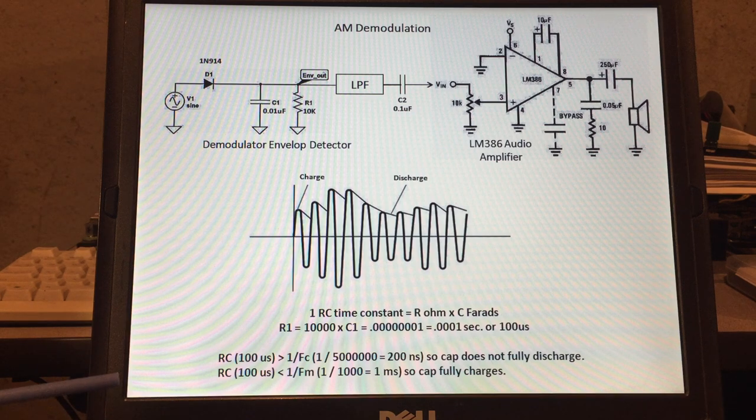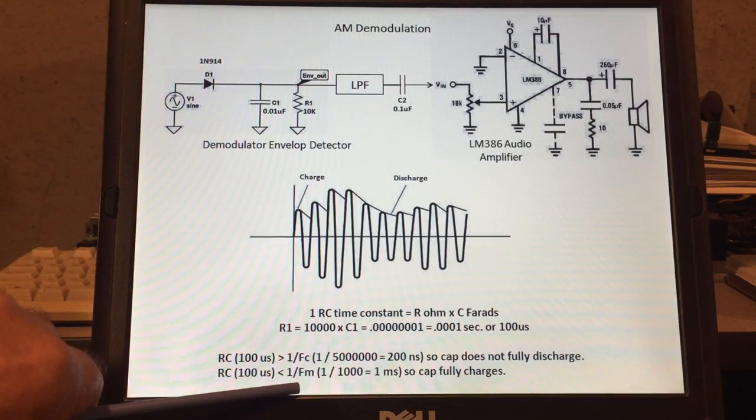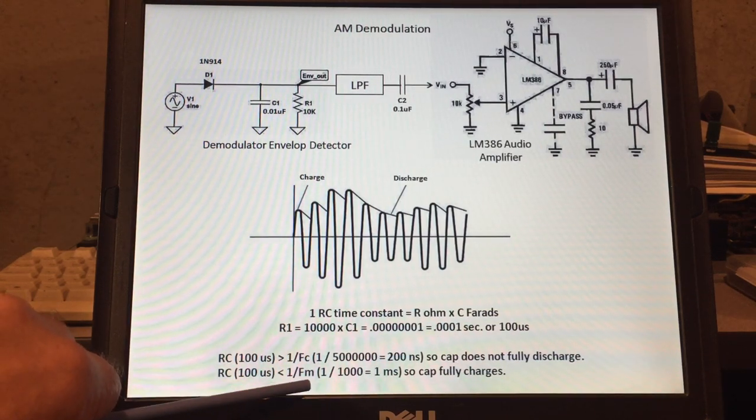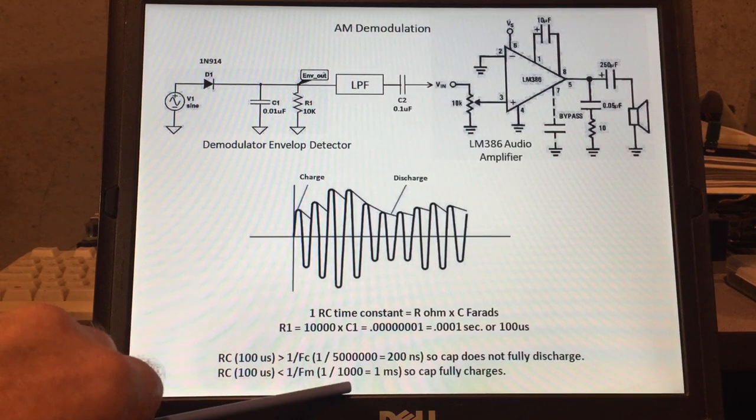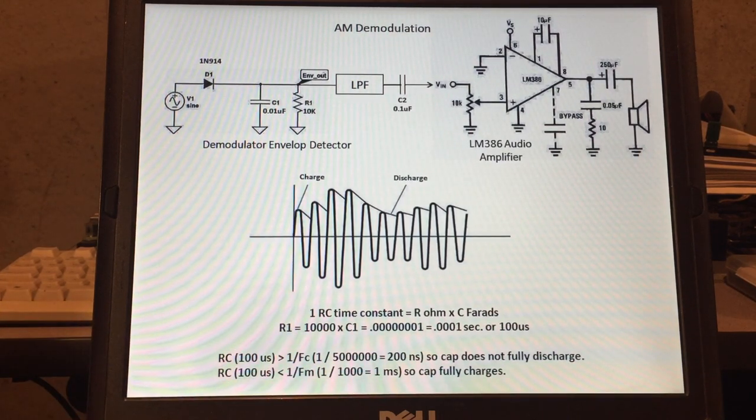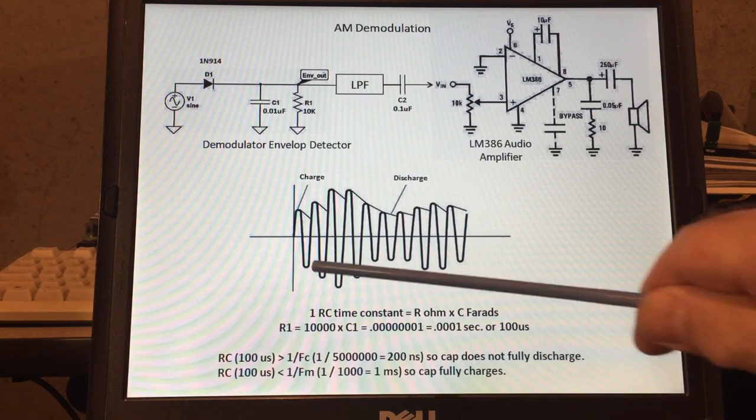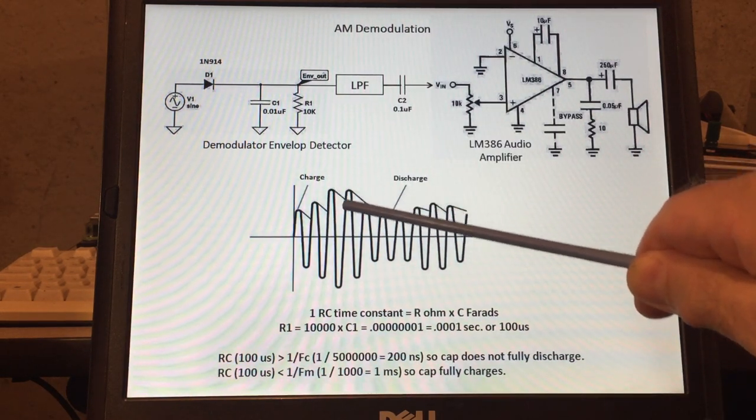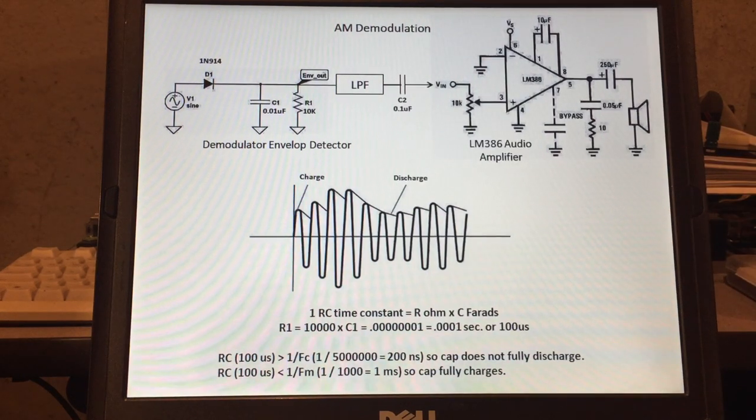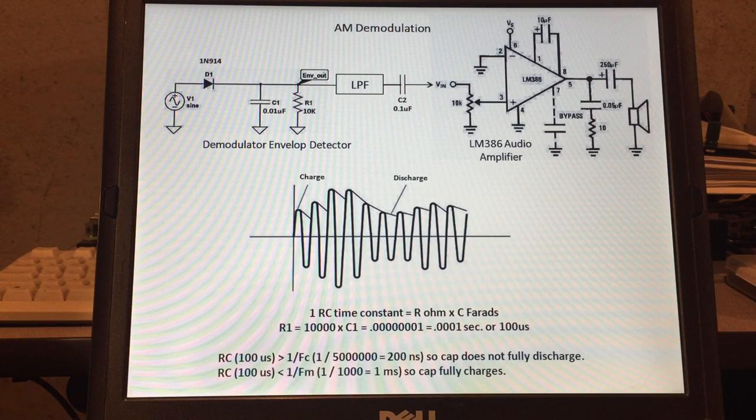Now the same holds true that RC should be less than 1 divided by the message frequency which we said was a 1 kilohertz tone. So 1 divided by a thousand is 1 millisecond. This is so the capacitor charges fully during and between cycles. So that's why the RC time constant is important and I'm going to just quickly demonstrate what happens if we use the wrong values, how that affects the envelope and what that looks like on the oscilloscope.